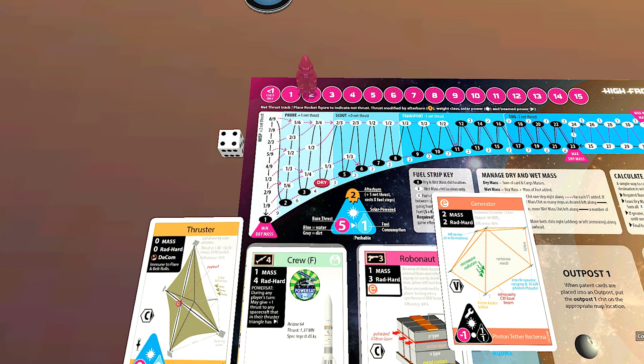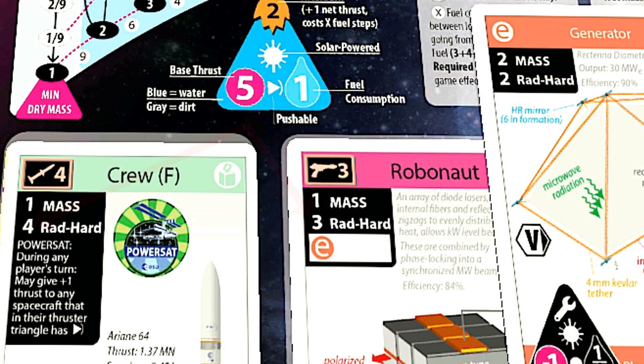If any of your equipment has a rad-hard number that is lower than the net result, then that item is decommissioned. My crew and robonaut survive easily, and my generator just scrapes by in this case.